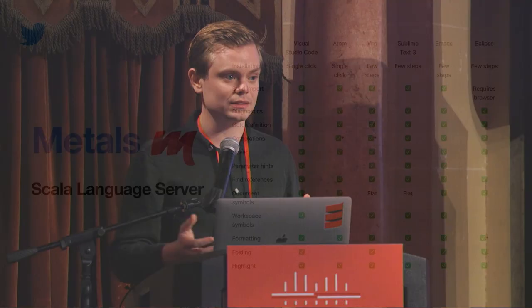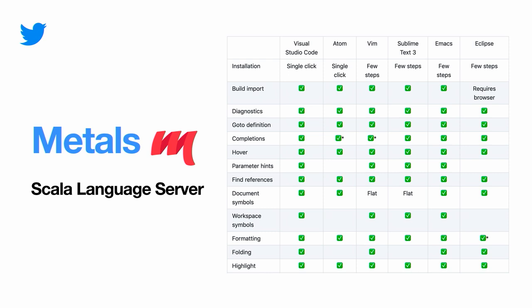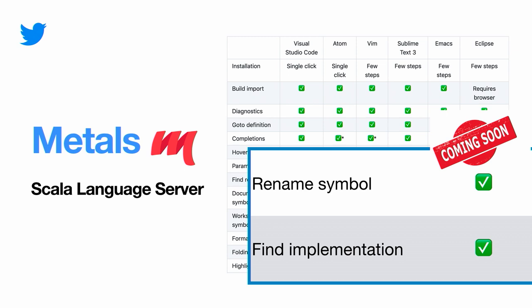Some of the latest things we've been adding just in the past two weeks: we've added rename symbol and find implementation, which lets you find all subclasses of a class or all methods that override a specific method. This has just been merged into master but is not in a stable release yet.